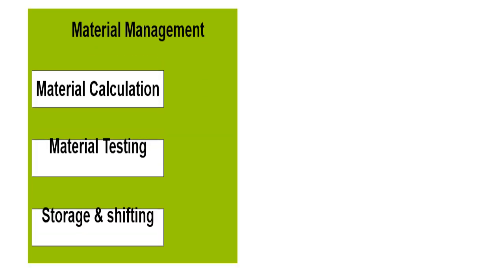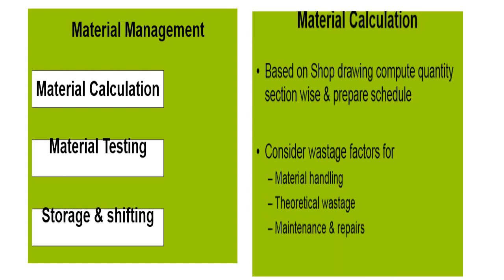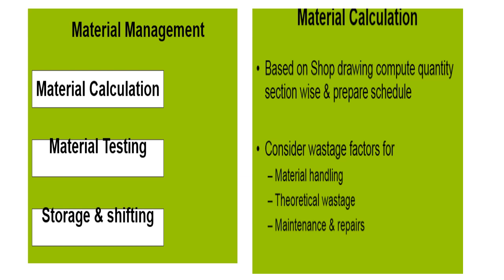For material management — what you require for the tiling and everything — you have to do material management, which will consist of material calculation, material testing, and finally storage and shifting. Based on the shop drawings, compute quantity section-wise and prepare a schedule for when you want it, how you want it, and how the lots have to come in. Consider wastage factors for material handling — theoretical wastage and maintenance reports — which will help you find out the final quantity of material required.